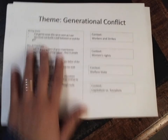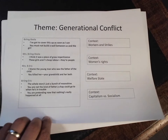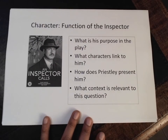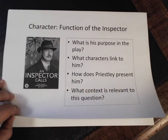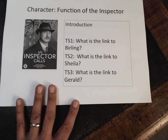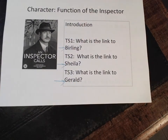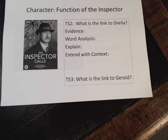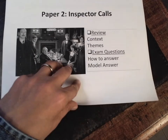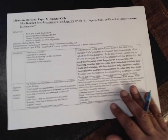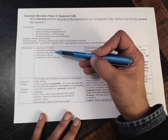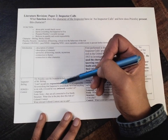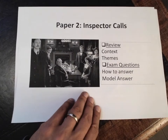We're running over time, so I'll go quickly. You need two quotes per paragraph. For a generational conflict question I'd do four paragraphs. Another example to revise is a character question — the most complicated one. What is the function of the inspector? In an introduction, think about his purpose, which characters are linked to him, how Priestley presents him, and what context is relevant. For me, I'd put all of that in the introduction. Then I would have Inspector vs. Burling, Inspector vs. Sheila, and Inspector vs. Gerald as my three paragraphs. You need to think about context, character, the function of the character, and themes all in the introduction, and then three extended PEE paragraphs with at least two quotes per paragraph and context.